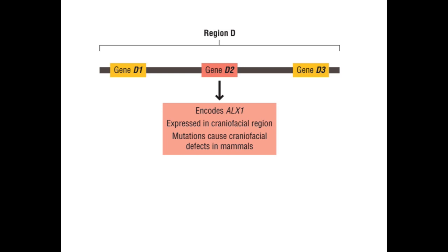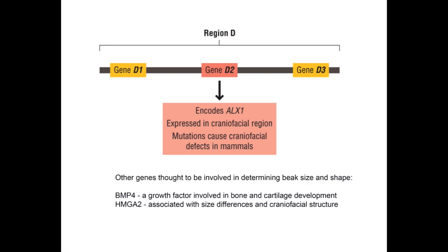Of these regions, six were known to be involved in craniofacial development, so would be likely to affect the way the beak is shaped. One region identified this way contained a gene called ALX1. The ALX1 gene encodes a protein, also called ALX1, that plays a role in turning on other genes, some of which are necessary for normal craniofacial development in vertebrates. Additional research on ALX1 will shed more light on its functions, the genes it controls, and how it may affect beak shape in finches. Researchers have also identified at least two other genes as possible contributors to the size and shape of the species: BMP4, a growth factor involved in bone and cartilage development, and HMGA2, which is associated with variation in beak and body size and affects craniofacial structure. Studies continue in an effort to learn exactly how these genes may affect beak shape.